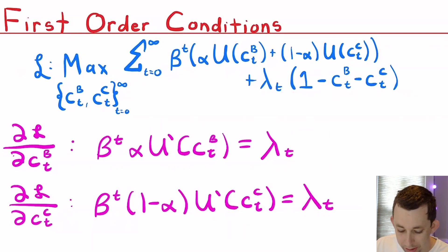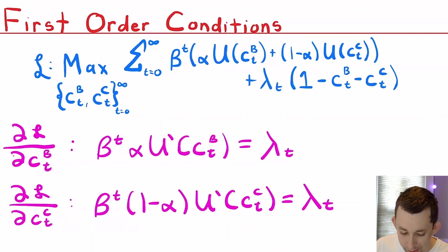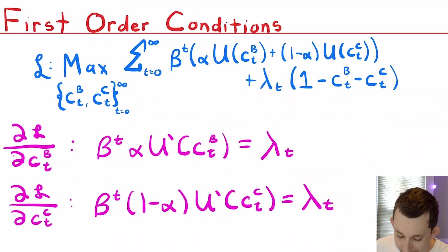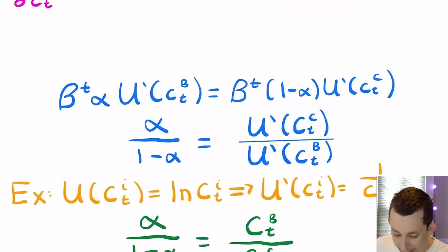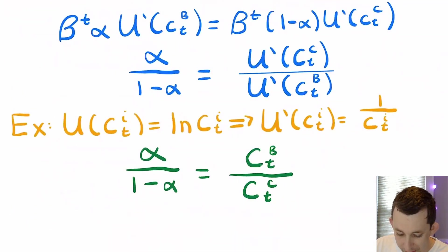Let's jump into the first order conditions. Here's the Lagrangian — I've added in the constraint with a lambda_t because we have one constraint for each period in terms of feasibility. We take first order conditions exactly as we've done before. Here is the FOC with respect to Bill in period t, and here is the FOC with respect to Chuckles in period t. We set both equal to lambda_t and simplify, canceling some betas. We're left with alpha over one minus alpha equals the ratio of marginal utilities.